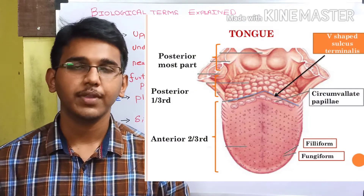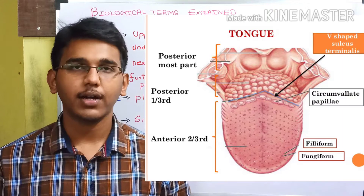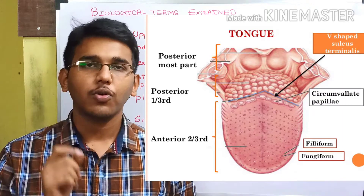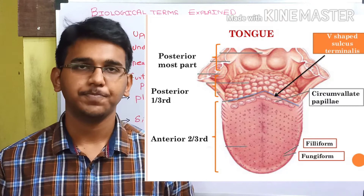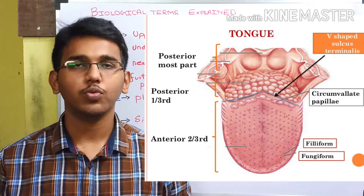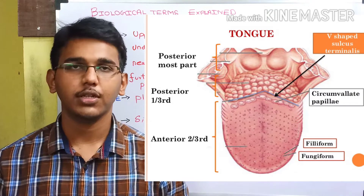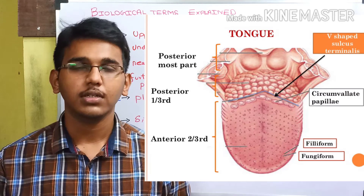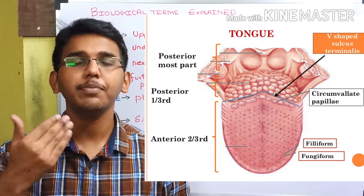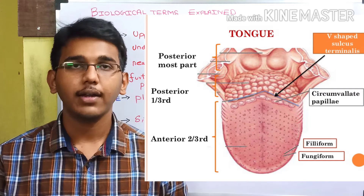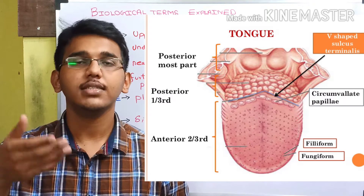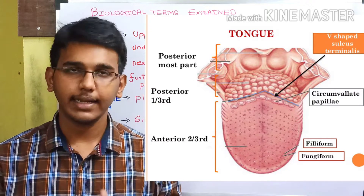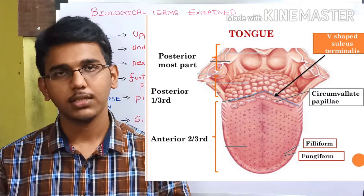Consider our tongue. It is divided into two parts by a furrow called the sulcus terminalis. The part of the tongue towards the opening of our mouth is called the anterior part, and the part towards the pharynx is called the posterior part. So now we are clear with what is anterior and posterior.